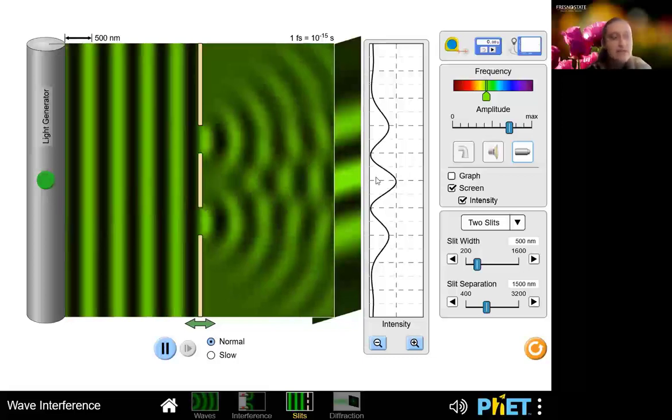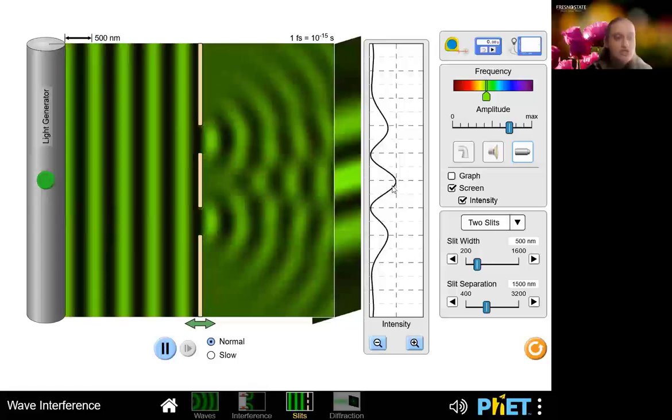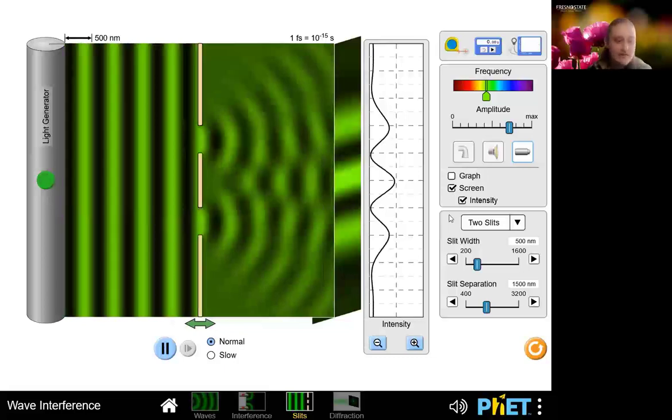And the constructive interference occurs in sort of equally spaced peaks. And in this case, we can see that there's actually a very intense peak, the most intense actually, just behind the barrier. So that's again, this is unique behavior to waves.